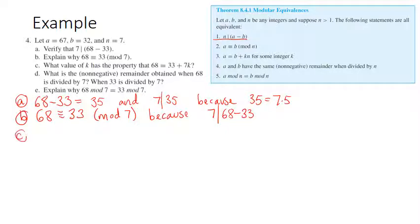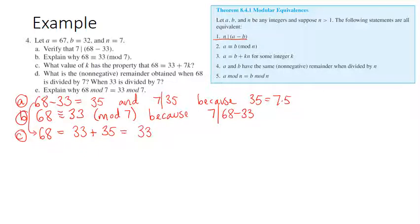For part c, what value of k has the property that 68 equals 33 plus 7k? We can write 68 as 33 plus 35, and then 35 can be split up into 7 times 5. So k here is 5.